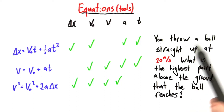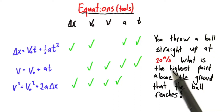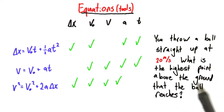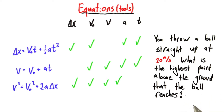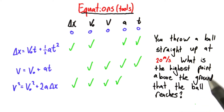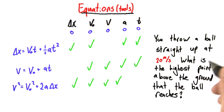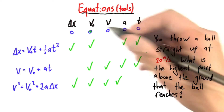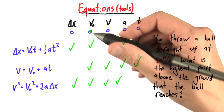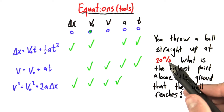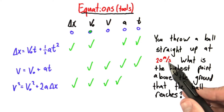For this question, we throw a ball straight up in the air at 20 meters per second. I want to know what's the highest point above the ground that the ball reaches. This question is tricky in several ways. Let's first try to identify our knowns — what was given to us. We throw it straight up with 20 meters per second of velocity. That's the initial velocity because that's how fast it's going at the beginning of the problem.